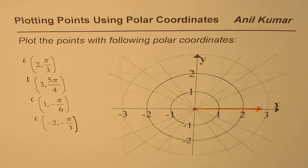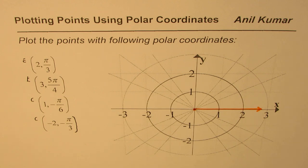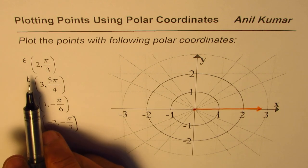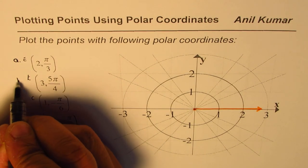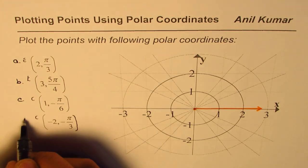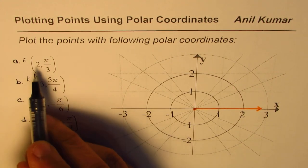The first point here is (2, π/3). Let me say this is point A, this is point B, C, and D.